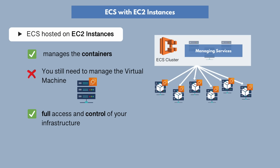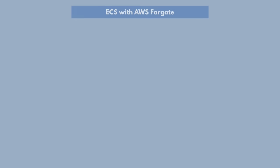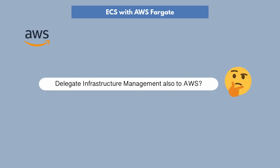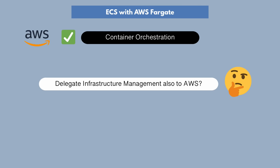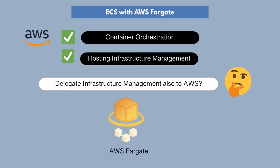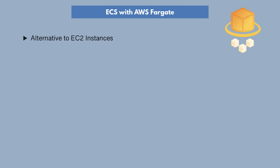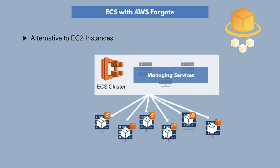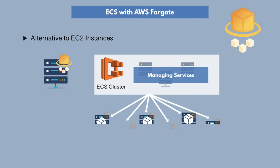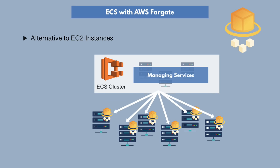You've delegated the management of your containerized application to the AWS service, which makes your operations easier. However, you still have the infrastructure — the virtual servers — to manage. What if you wanted to delegate management of the infrastructure also to AWS? So you want the container lifecycle to be managed by AWS and you also want the hosting infrastructure to be managed by AWS. There is an option for that, and it is called AWS Fargate. Fargate is basically an alternative to EC2 instances — instead of provisioning EC2 instances and connecting them to the ECS cluster, you don't need to provision any virtual machines.